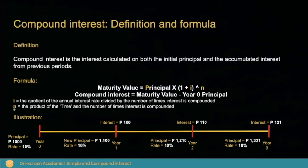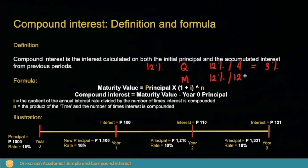i is the quotient of the annual interest rate divided by the number of times interest is compounded. Let us say we have 12% as our annual interest rate. If we divide on a quarterly basis, we get i by dividing 12% by the number of quarters within a year — that is 12% divided by 4, which gives 3%. For a monthly basis, we divide 12% by the number of months within a year, which is 12 — so 12% divided by 12 gives 1%.